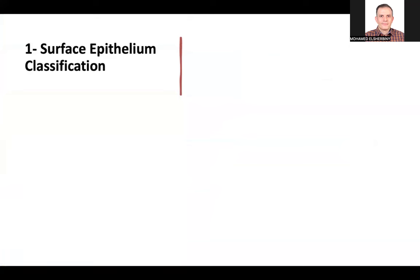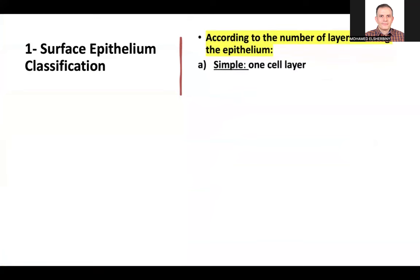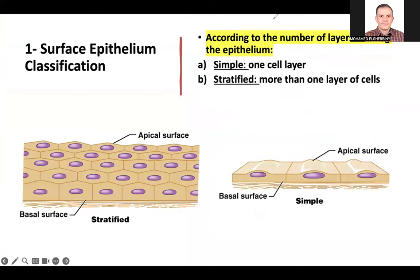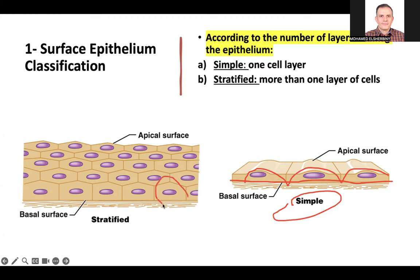Number one: surface epithelium. We divide its types according to whether it has one layer or more than one layer. If we have only one layer of cells, it is named simple epithelium. If the cells are arranged above each other — two, three, or more layers — it is named stratified epithelium.